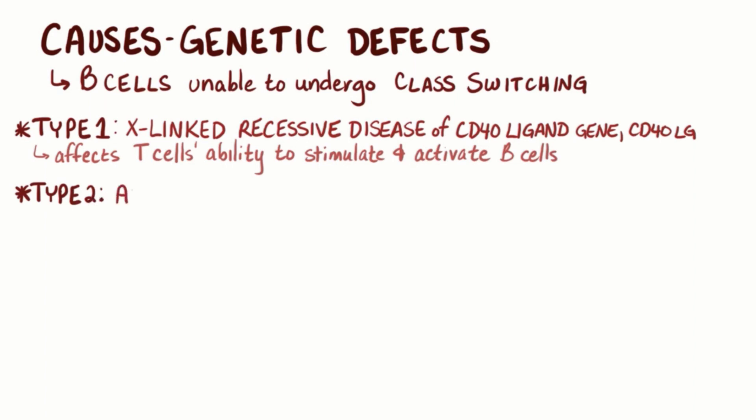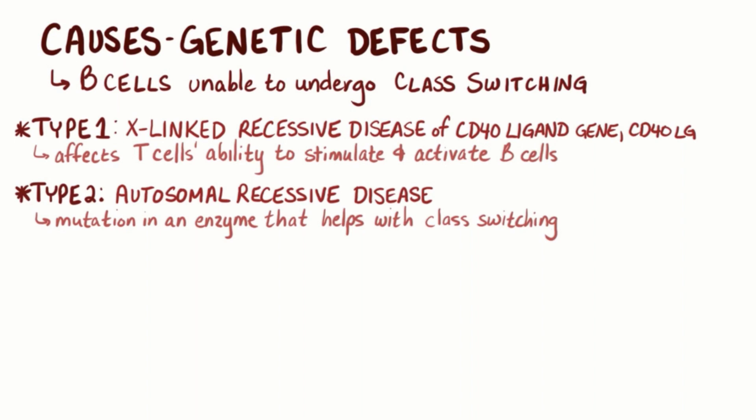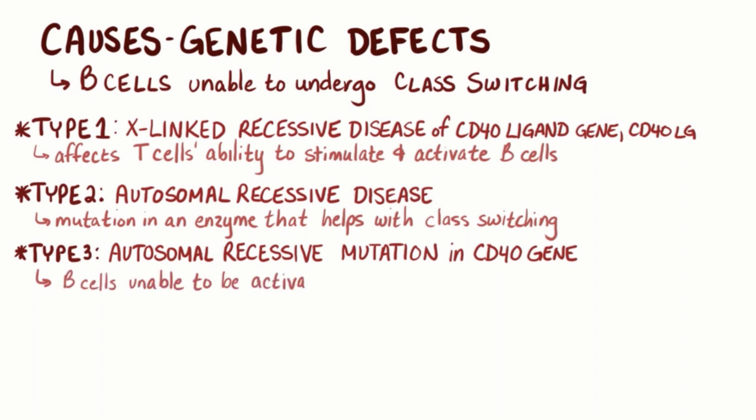Type 2 is an autosomal recessive disease in which there is a mutation in an enzyme that helps with class switching in the B-cells. Type 3 is an autosomal recessive mutation in the CD40 gene affecting B-cells, so that they are unable to be activated by T-cells.